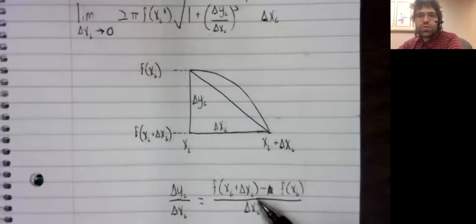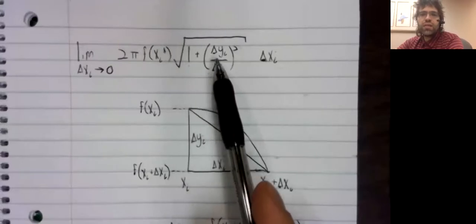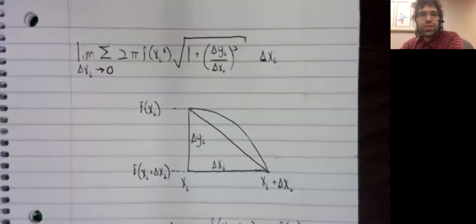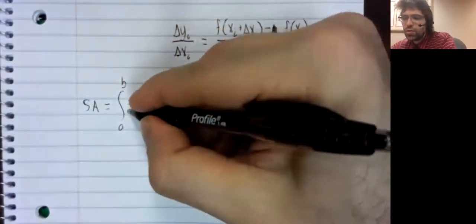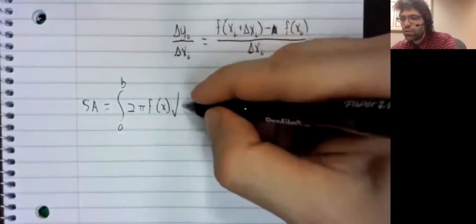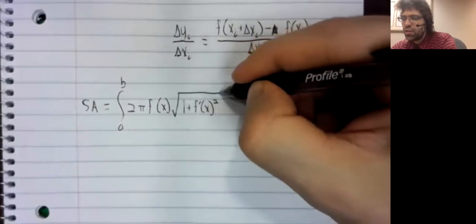And as the denominator goes to zero, this turns into the derivative. Or rather, this becomes one plus the derivative squared. And in this limiting case, I lost our summation notation, this sum becomes an integral. And we find that the surface area is the integral of two pi f of X times the square root of one plus the derivative squared.